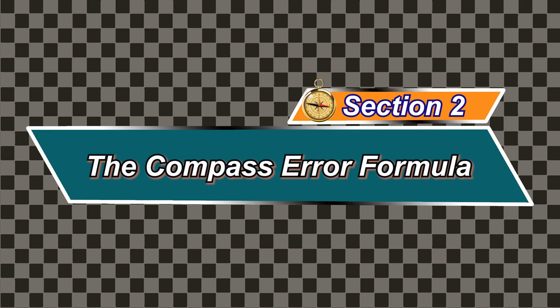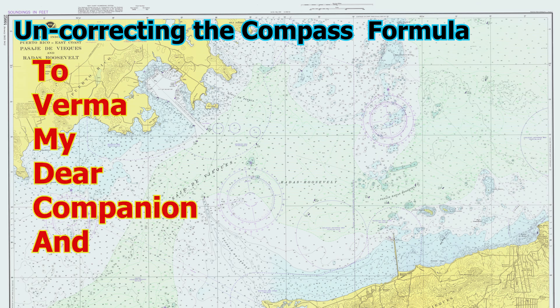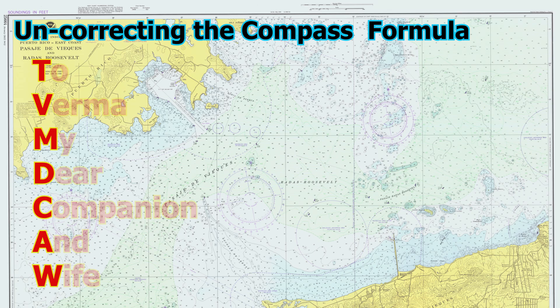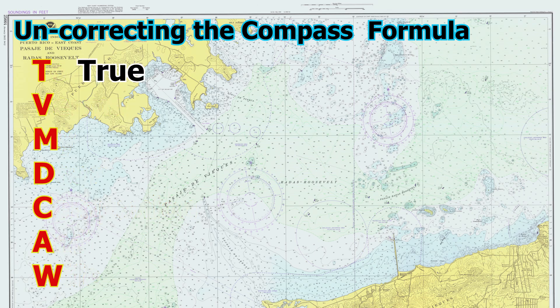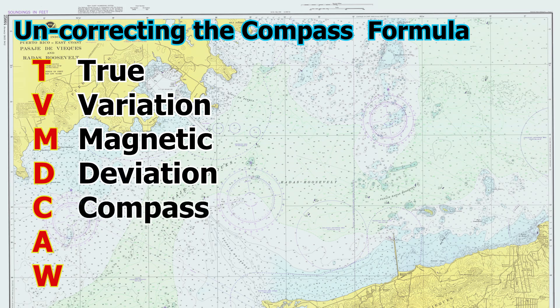Section 2: The Compass Error Formula. The uncorrection follows a simple sequence, remembered by the mnemonic 'To Verma, my dear companion and wife.' T stands for True, V for Variation, M for Magnetic, D for Deviation, C for Compass. And finally, A means Add, while W means West.